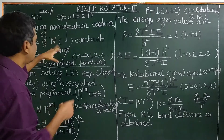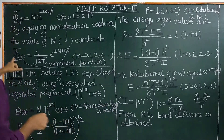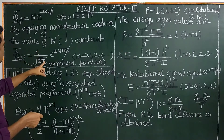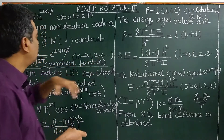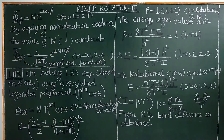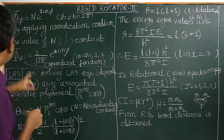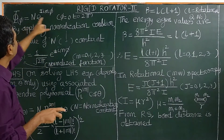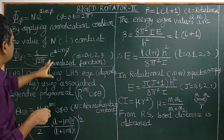One more video is available with the full mathematical derivation — please find the link in the description below. The normalized phi wave function is: Φ = (1/√(2π)) · e^(±imφ), where m = 0, 1, 2, 3, etc. It is a quantum number — one of the quantum numbers used to describe this wave function. This is the normalized wave function.